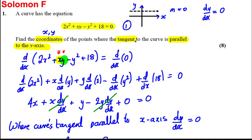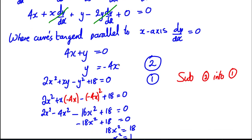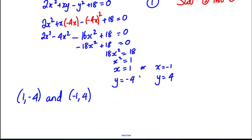That's quite a tricky question for eight marks. You had to realize that being parallel to the x-axis meant dy/dx = 0, perform implicit differentiation, set dy/dx to zero to get an equation, then solve that simultaneously with the equation of the curve to find x, and substitute back to find y.